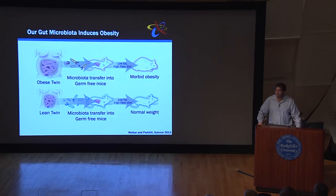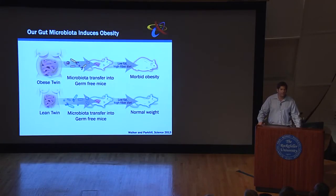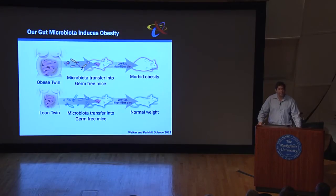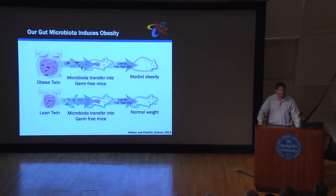Just a few months ago, the same exact concept was shown in humans. A group took pairs of human twins — identical twins — where one twin was very obese and the other was very lean. The gut microbes were taken from each twin and transferred into germ-free mice. Exactly as in the mouse model, mice that received gut microbes from the obese twin gained twice as much weight as those receiving microbes from the lean twin. This proved that our microbiota is a very important regulator of our physiology, including our metabolism.